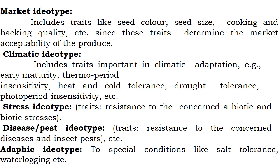Other classification types include: market idiotype, incorporating traits like seed color, seed size, cooking and baking quality that determine market acceptability; climatic idiotype, including traits for climatic adaptation such as early maturity, thermo-period insensitivity, heat and cold tolerance, drought tolerance, and photoperiod insensitivity; stress idiotype, with resistance to concerned abiotic or biotic stress; and disease or pest idiotype, with resistance to disease and insect pests.